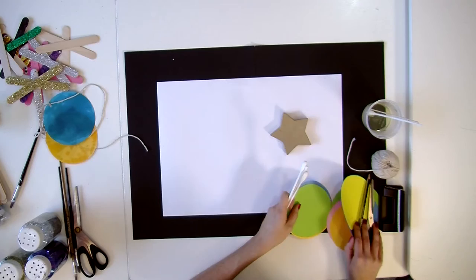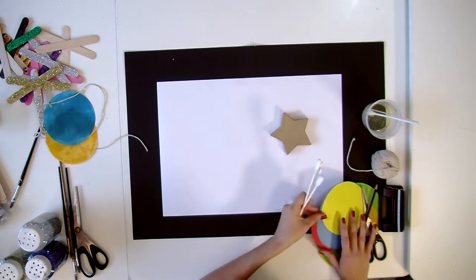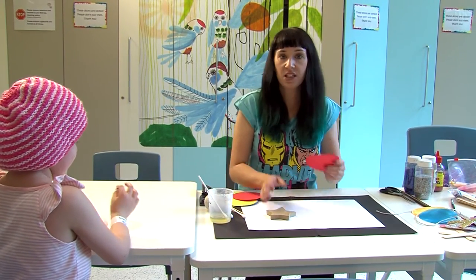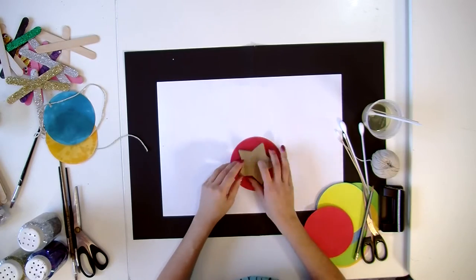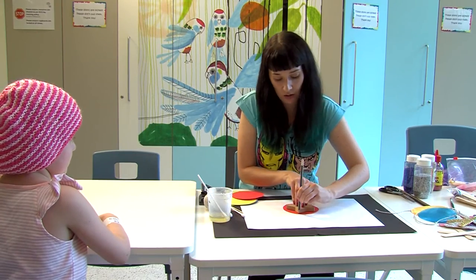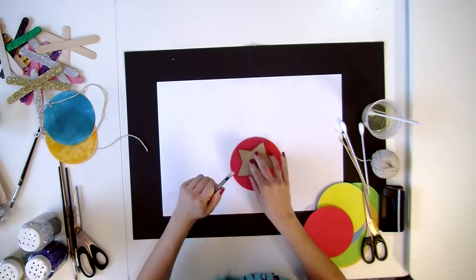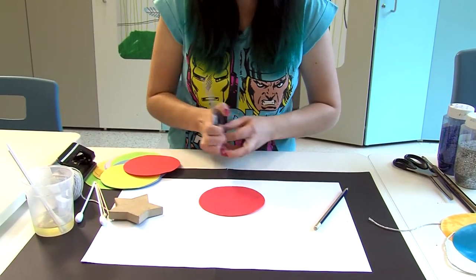Let's get started. What color do you think I should make mine? Red? Okay. So I'm going to start by making a red star. I'm just going to trace around and cut it out.